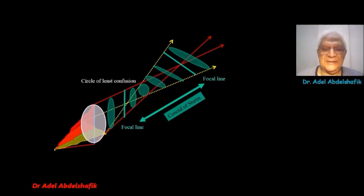Here in the middle, we can see the bundle of rays shape is circular. We call it the circle of least confusion.